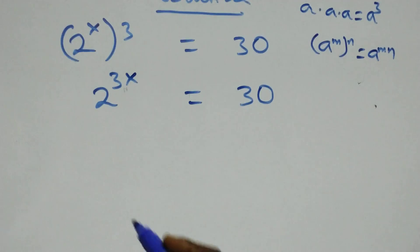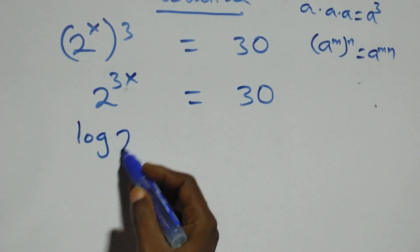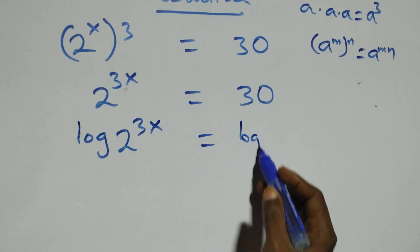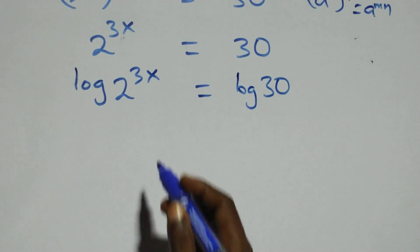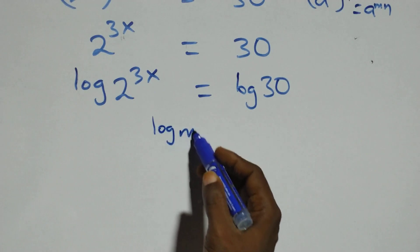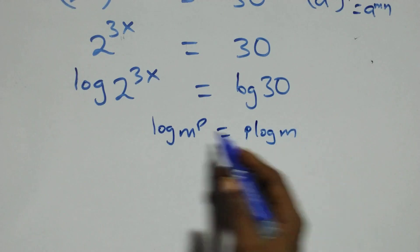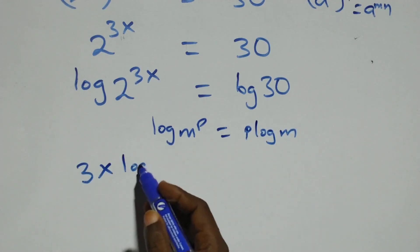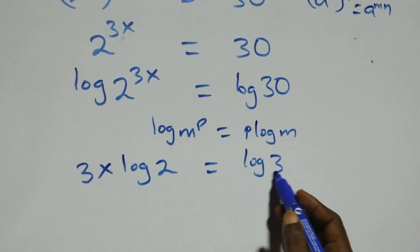We take the log on both sides: log of two raised to power three x equals log thirty. We apply the power rule of logarithm — when we have log of n raised to power p, this is the same as p times log n. So here we have three x times log two equals log thirty.